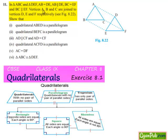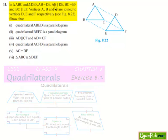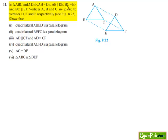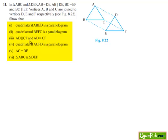7th question. In triangle ABC and triangle DEF, AB is equal to DE and AB is parallel to DE. BC is equal to EF and BC is also parallel to EF. Vertices A, B, and C are joined to vertices D, E, and F respectively. Show that: quadrilateral ABED is a parallelogram; quadrilateral BEFC is a parallelogram; AD is parallel to CF and AD is equal to CF; quadrilateral ACFD is also a parallelogram; AC is equal to DF; and triangle ABC is congruent to triangle DEF.